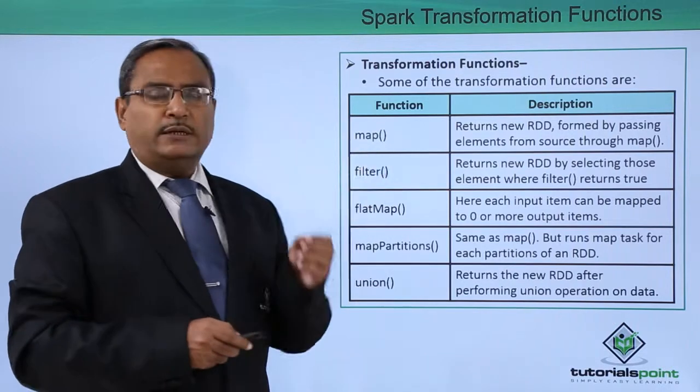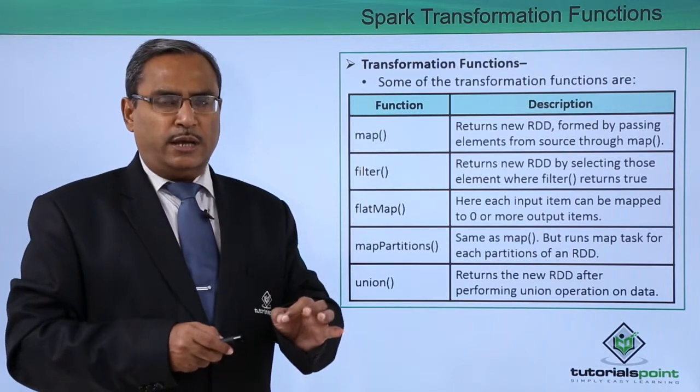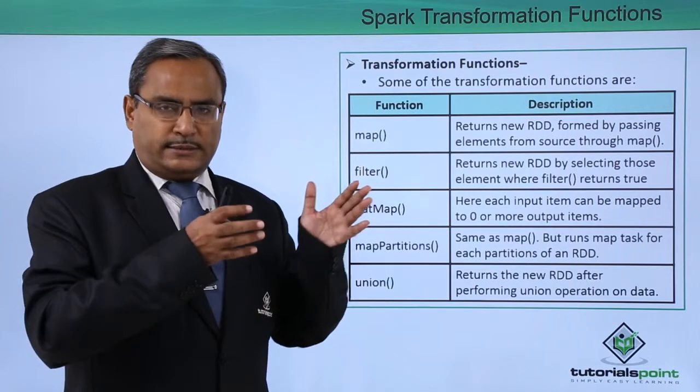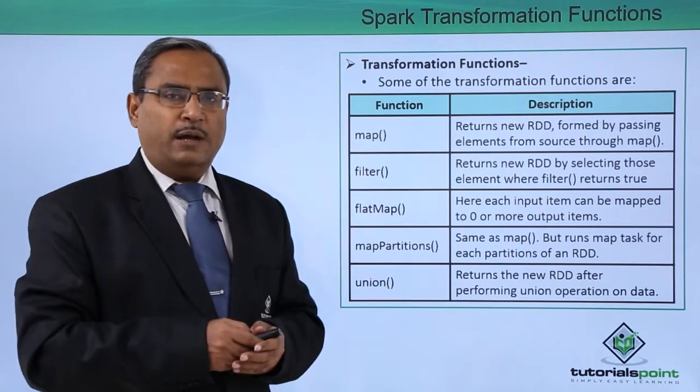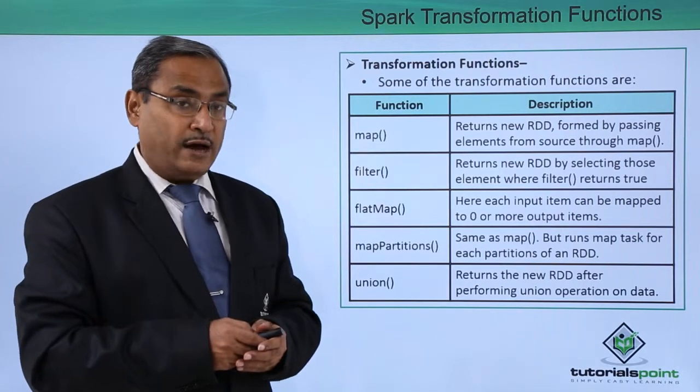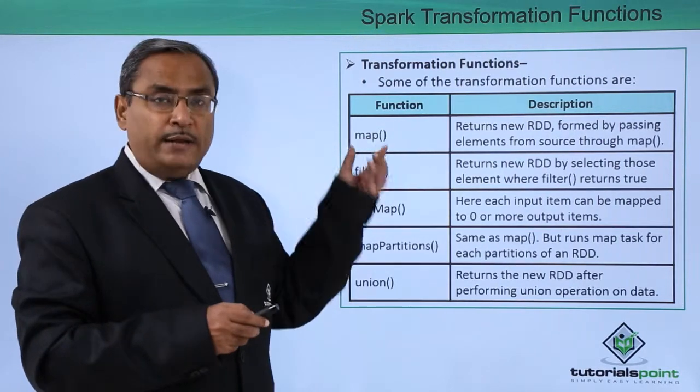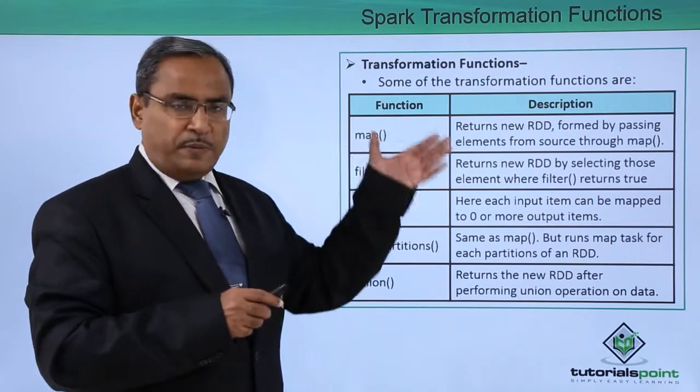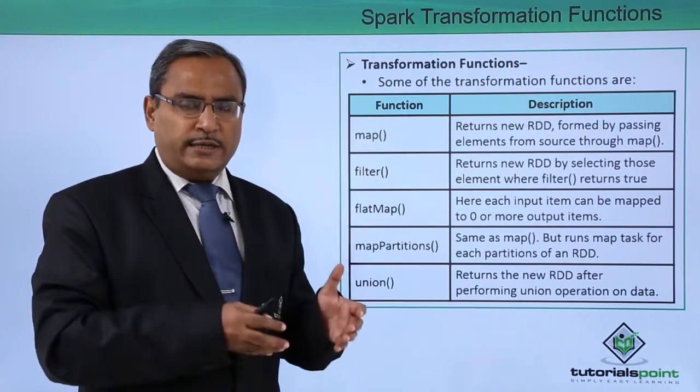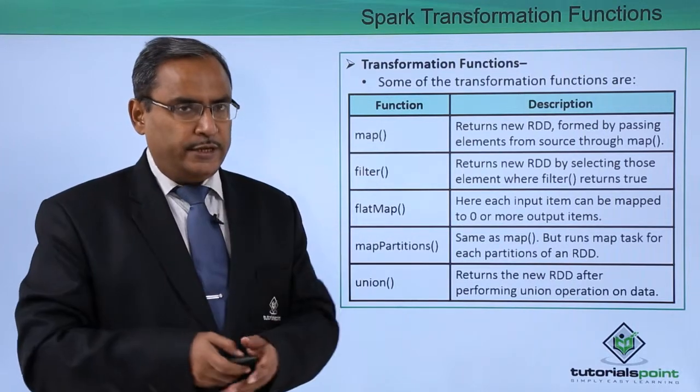In the case of map, the user can put the respective business logic and here it will take the same partitions, same number of partitions as input and same number of partitions will be produced as output. That is the main concept in this map and like all transformation functions, it will take RDD as input and produces RDD as output.